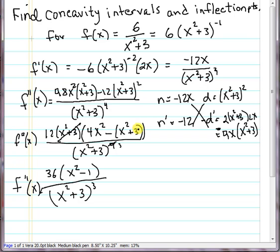So I GCF factored out another 3, 36 here, and x squared minus 1, and I cancelled this x squared plus 3 with one of the ones in the bottom. So that got us to the second derivative.